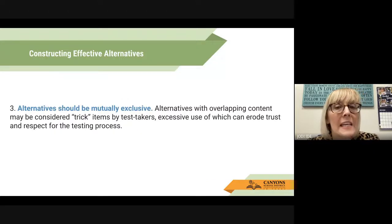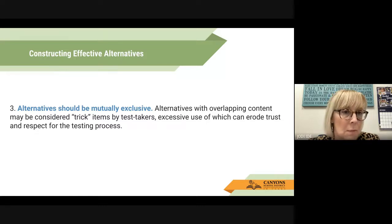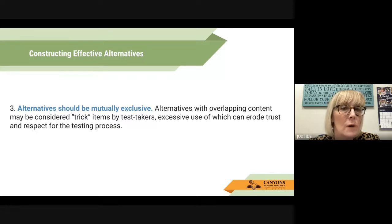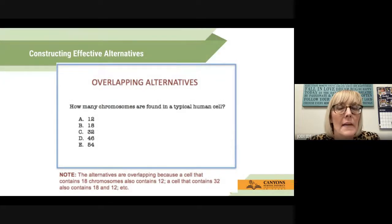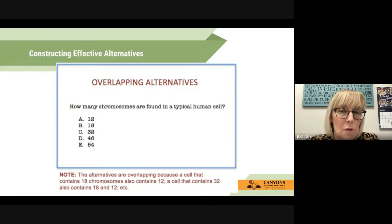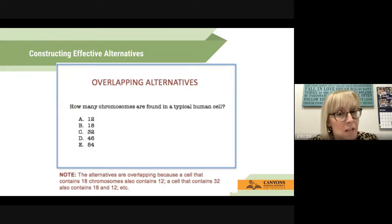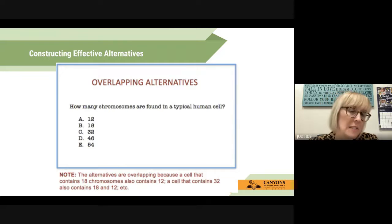Alternatives should be mutually exclusive. Alternatives with overlapping content may be considered trick items by test takers, and excessive use can erode trust and respect for the testing process. For example, "how many chromosomes are found in a typical human cell?" with options 12, 18, 32, 46, 54 — note the alternatives are overlapping because a cell that contains 18 chromosomes also contains 12, a cell that contains 32 also contains 18 and 12, et cetera.